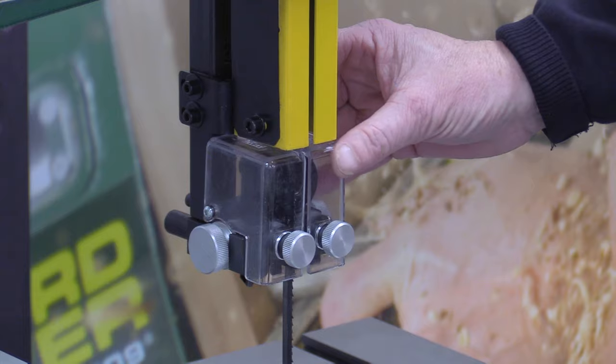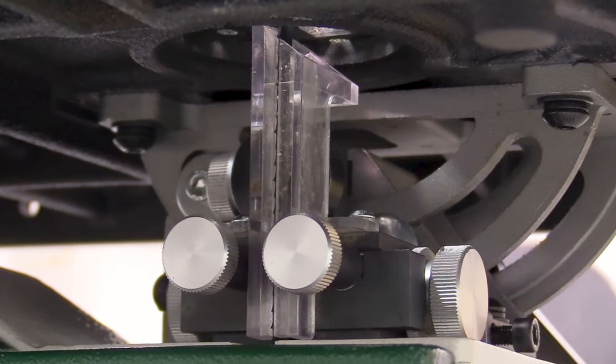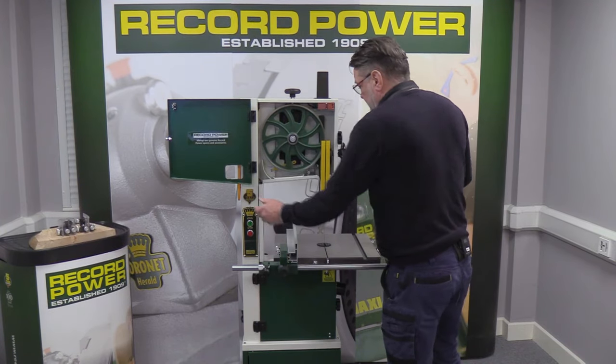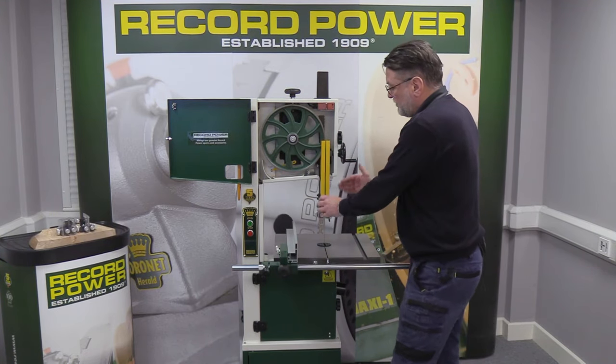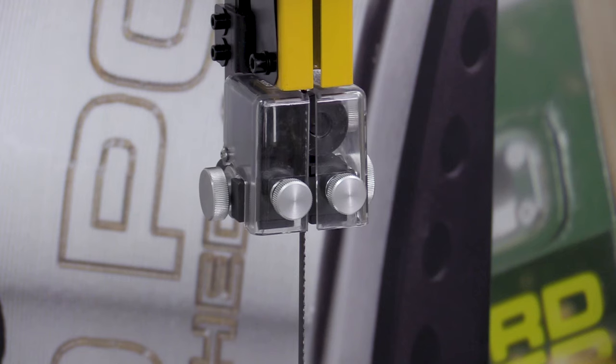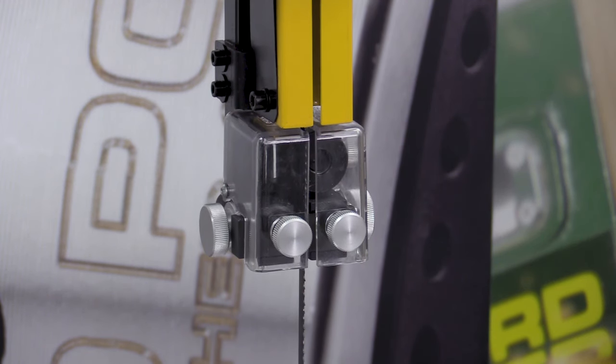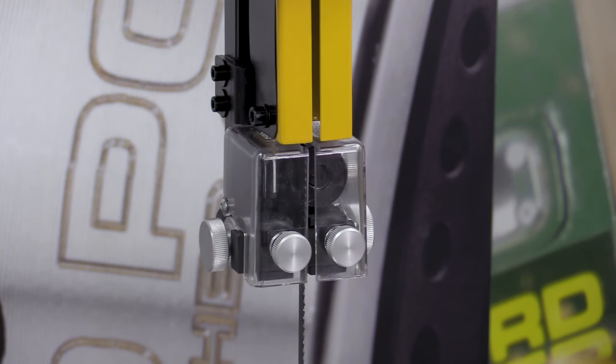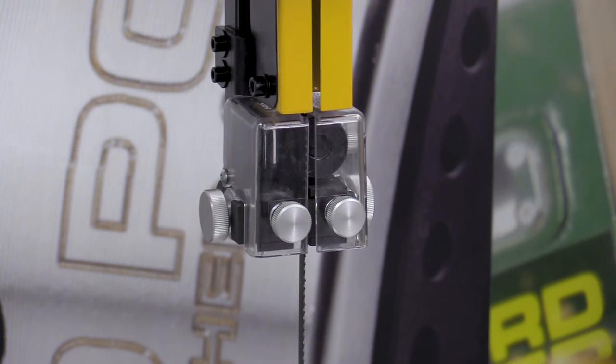We have these above and below the table. To adjust the ones above to the correct height we use the rack and pinion system. So we simply unlock the lock and then turn the hand wheel up or down to the required height for the depth of the material that you're cutting.